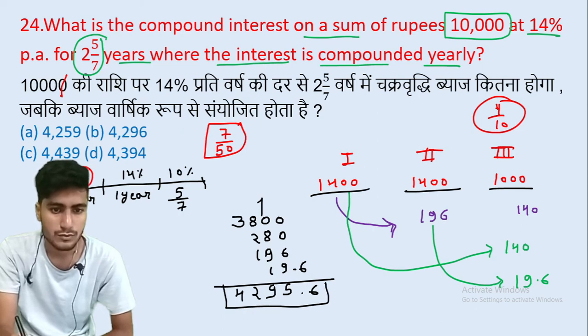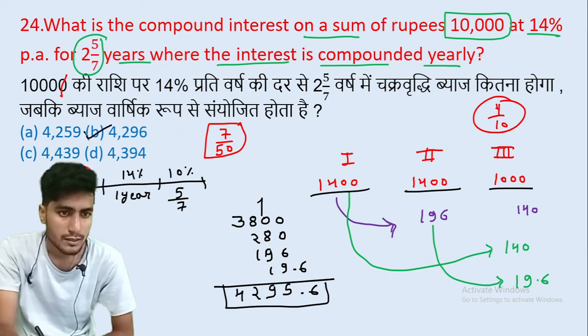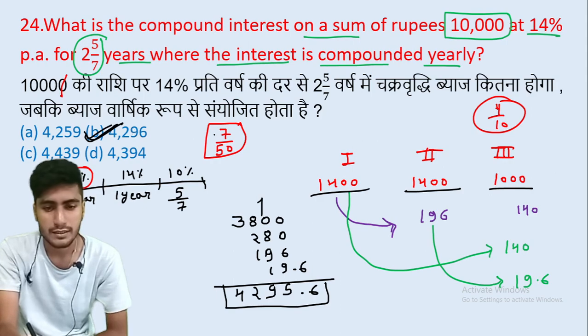The result comes to approximately 3,195.6 as the compound interest, which matches the nearest option and is the correct answer.